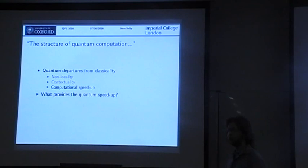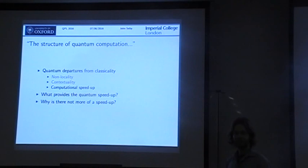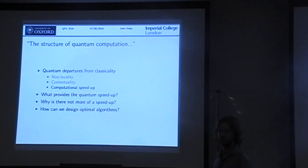What do we really want to know? We want to know what actually provides this computational speedup, but also why isn't there more of a speedup. You might think that a quantum computer should be able to solve NP-complete problems, but we want to know some reason why there's not more of a speedup than this. And if we can get some deeper understanding, can we use this to design optimal algorithms or do new tasks by knowing what the bounds are and where they come from.